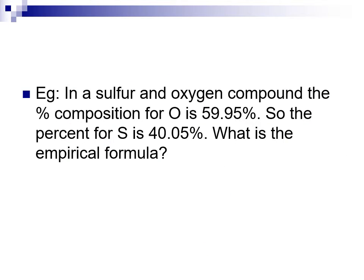So let's try it out with this example. We have a compound containing sulfur and oxygen, and we are given the percent compositions: oxygen is 59.95% and sulfur is 40.05%. They add up to 100%. From this, what is the empirical formula? Remember the process: we've got to get to a mole ratio, and to get to moles we're going to use masses.